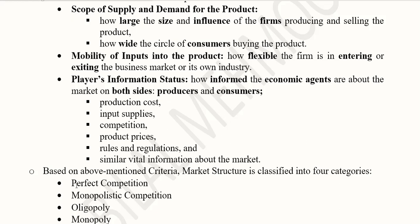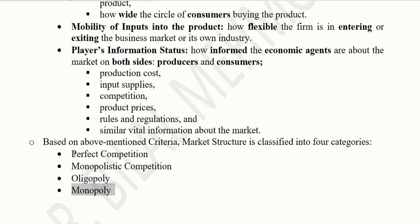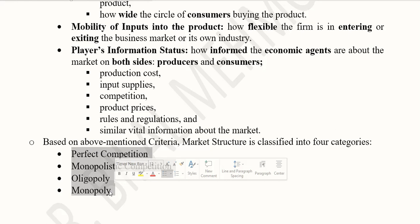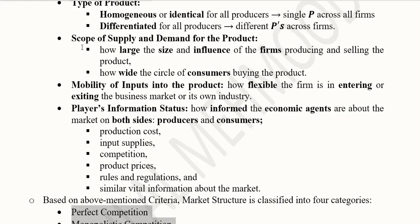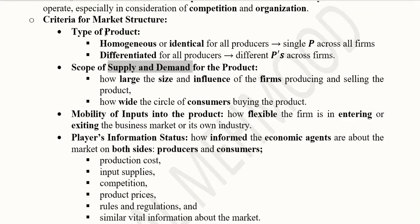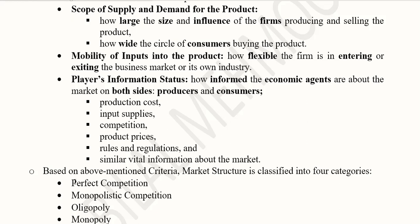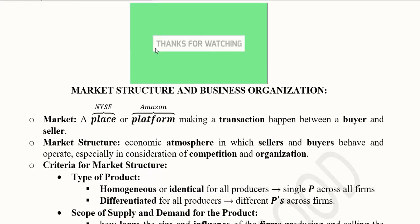Based on these criteria, a firm can operate in one of four market structures: perfect competition, monopolistic competition, oligopoly, or monopoly. The number of buyers and sellers gives a clear idea of these market structures, alongside factors like mobility of inputs, the level of information, scope of supply and demand, and the kind of products being sold. In the upcoming videos, we'll be understanding each of these market structures one by one in depth. I hope you have learned from this introduction — thank you for watching.